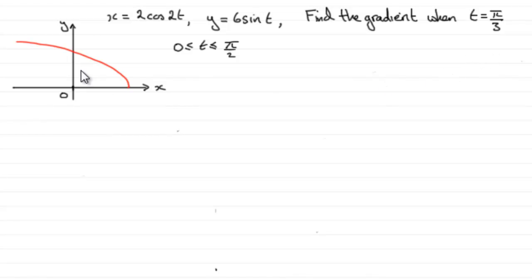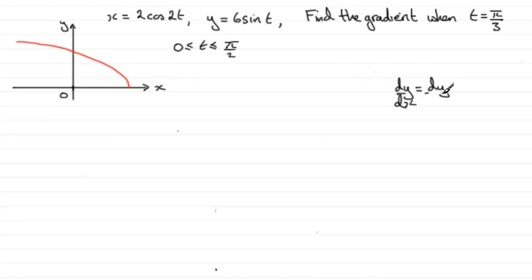To find the gradient at any point on this curve, we've got to find dy/dx. In order to find dy/dx, we've got to use the chain rule — dy/d(something) multiplied by the same d(something)/dx, as if the d(somethings) cancel. For this question, it's going to have to be dt.